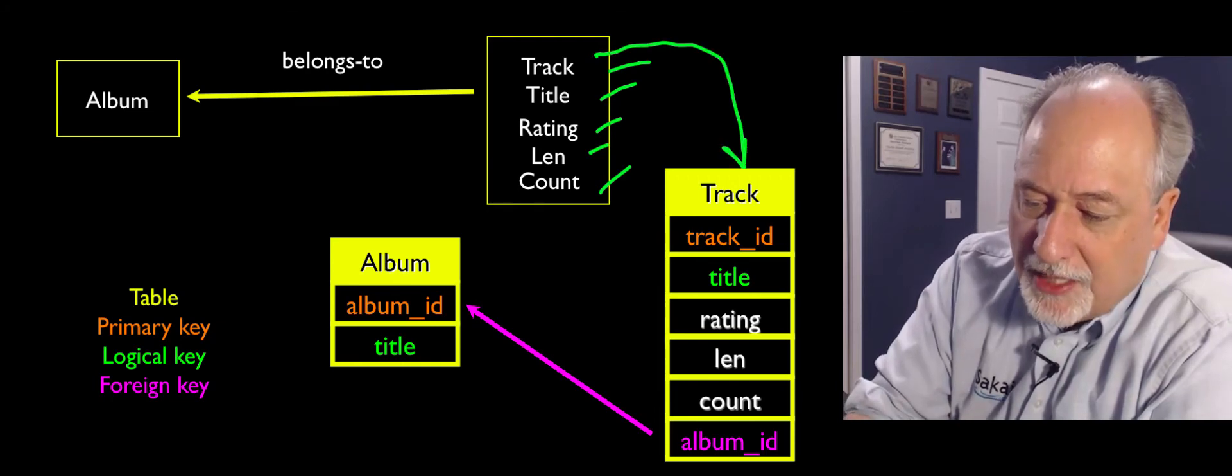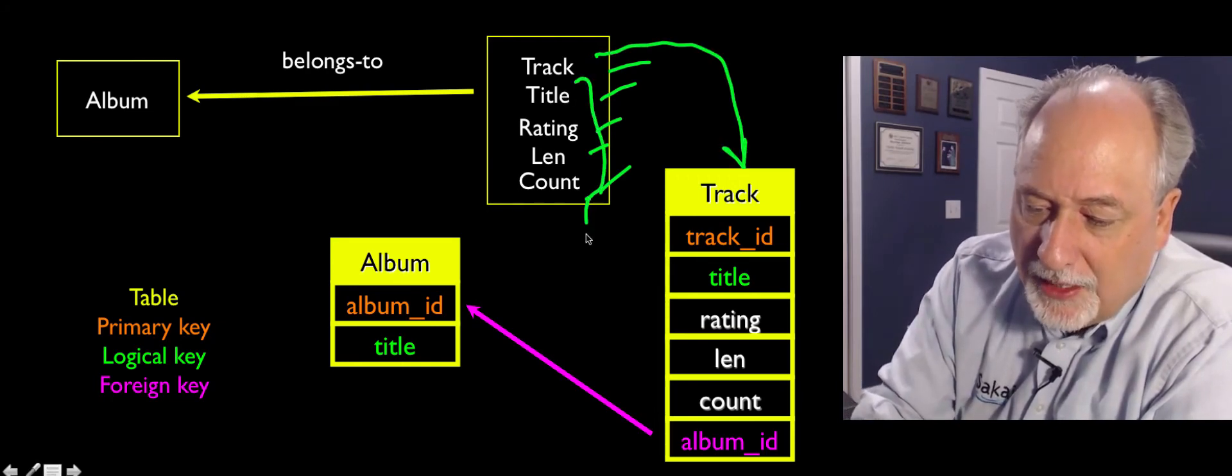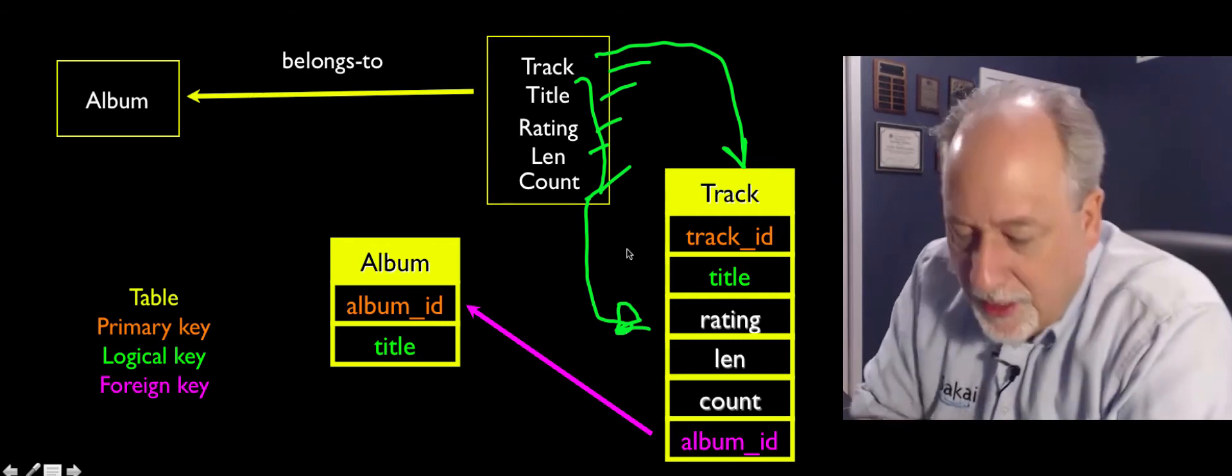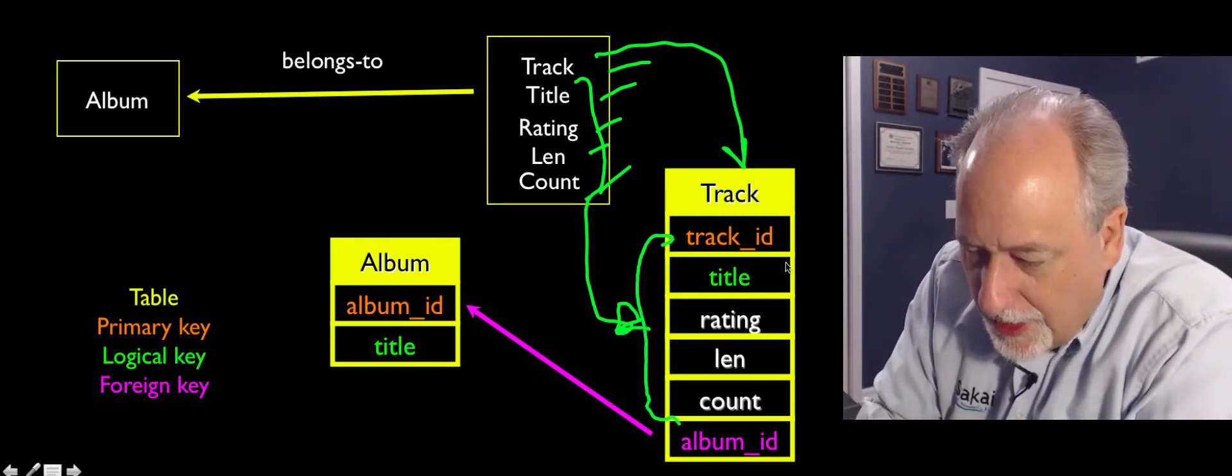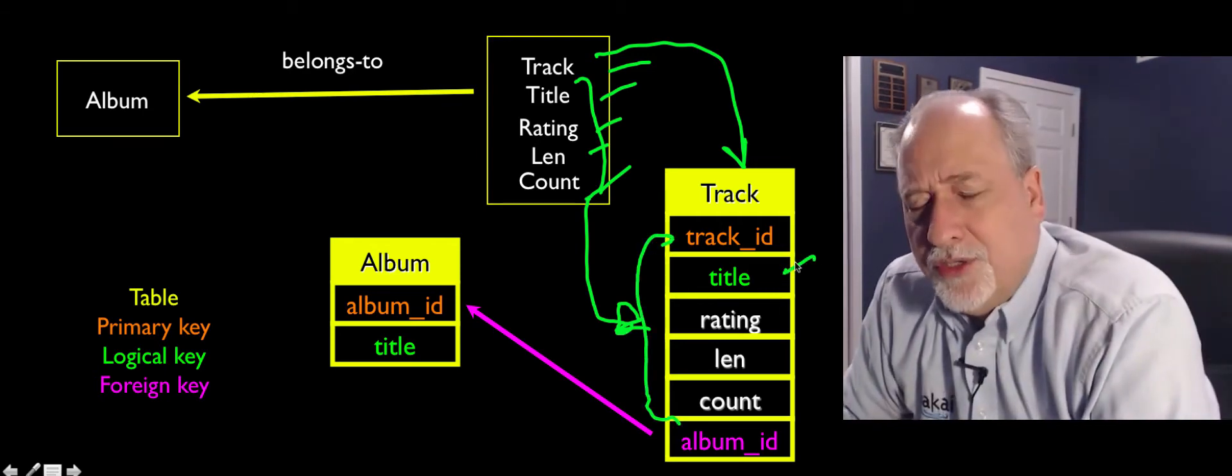And so those things, track becomes the name of the table, and then title, rating, and length, and count sort of become the data items right here. And we're gonna mark title as the logical key.